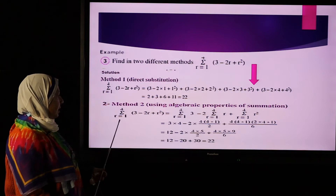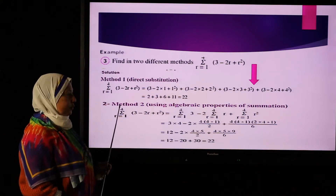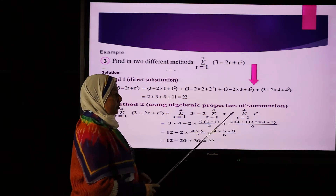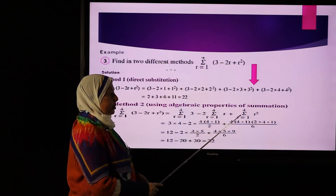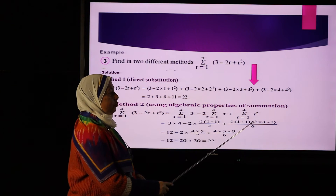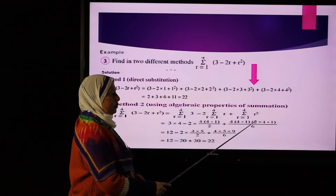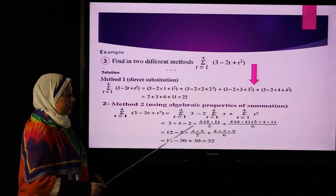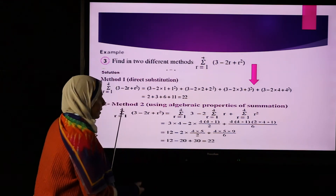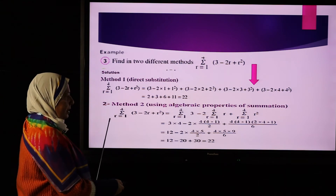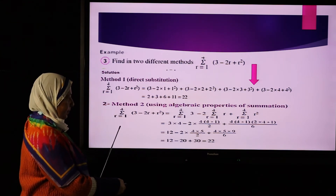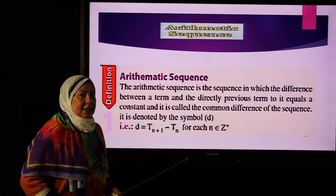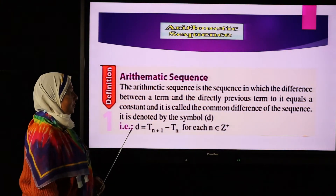For the r² term, using the rule that summation from r=1 to n of r² equals n(n+1)(2n+1)/6: with n=4, this equals 4×5×9/6. The result can be verified by calculator or mental arithmetic. Now the second lesson: arithmetic sequence.